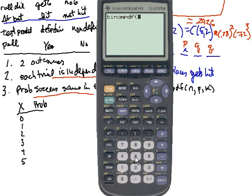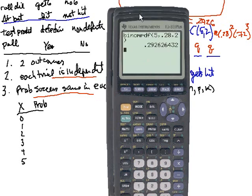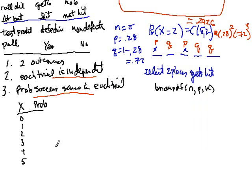In our situation, we had a total of five at-bats. The probability of the person getting a hit was 0.28. And we wanted to find the probability he got exactly two hits. And we hit Enter. And you see that was going to be exactly the value we had last time, 0.2926. So we'll just round it off and call it 0.29.